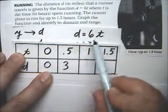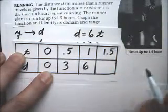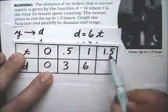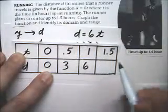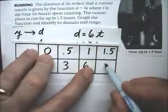When t is 1, it's 1 times 6, which is 6. And when t is 1.5, it's 6 times 1.5, which is 9.